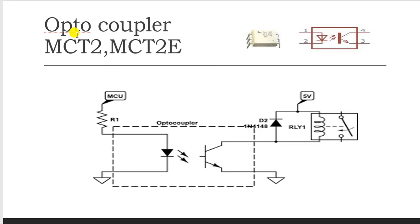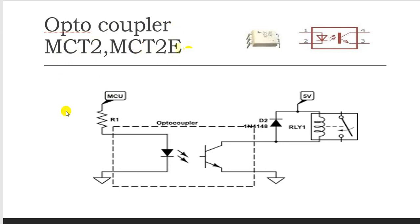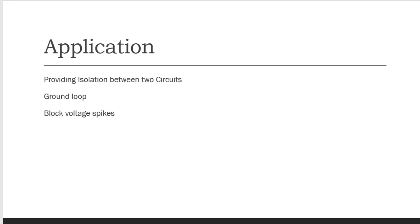An optocoupler provides electrical isolation between two circuits. It consists of a pair of components: an LED and a photodiode or phototransistor. The first circuit is connected to the LED and the second circuit is connected to the phototransistor, providing isolation between them. An example of an optocoupler is the MCT2E. Applications include providing circuit isolation and blocking ground loops or voltage spikes.